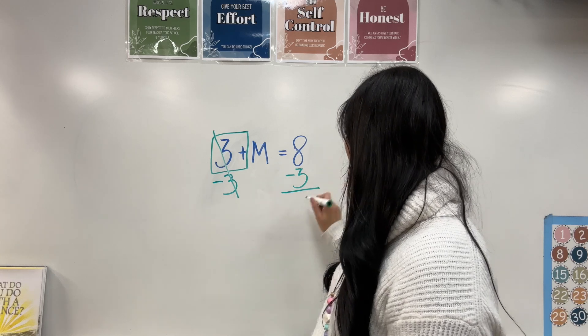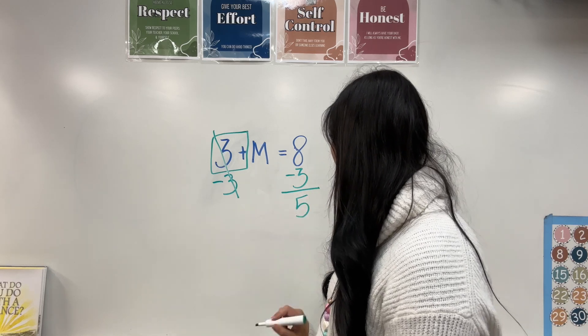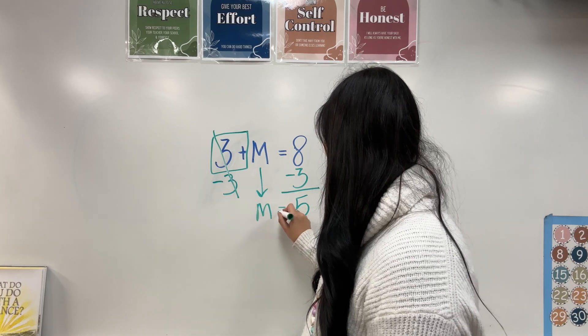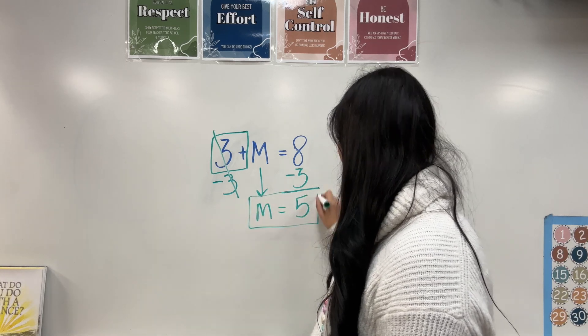I solve for this one. Eight take away three equals five. So I got that m by itself. m equals five. That's our answer.